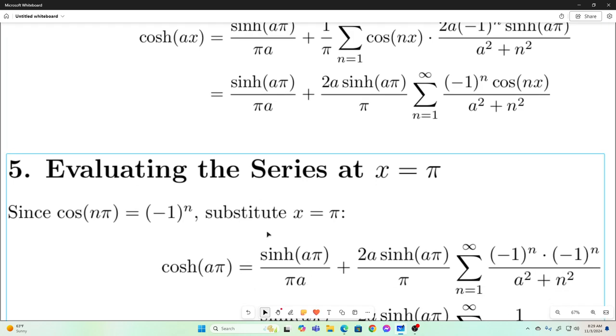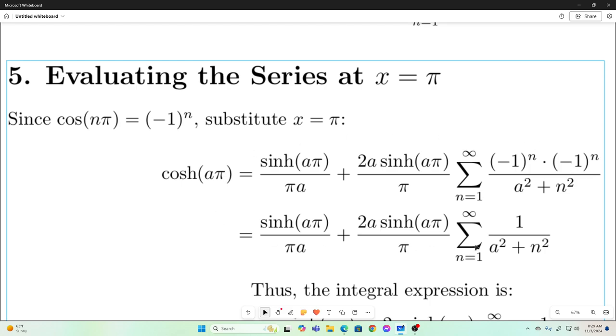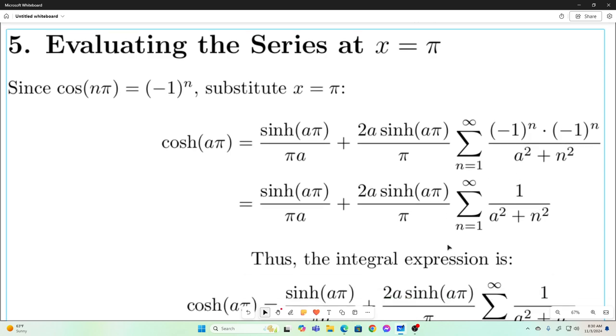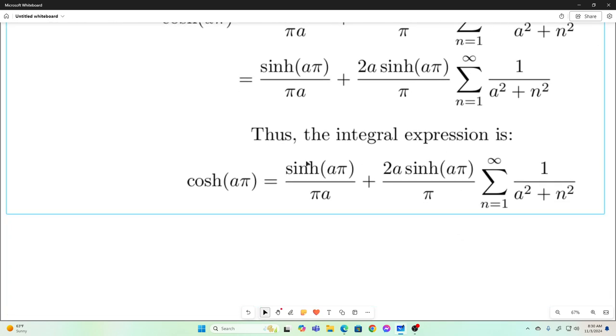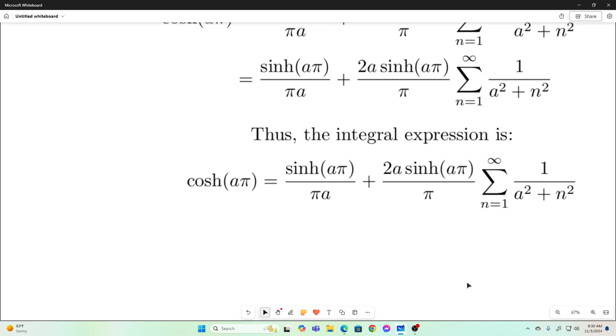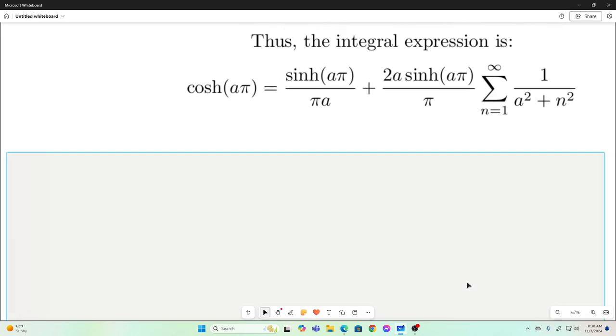All right, so we get this stuff. Again, I'm not going to verbally explain a lot of this stuff, because, you know, my voice would get tired, but this is what we end up with. We end up with the hyperbolic cosine of a pi being equal to the hyperbolic sine of a pi over pi a plus 2a hyperbolic sine of a pi over pi times our target sum. All right, so now we just need to solve for our target sum, and we are done.